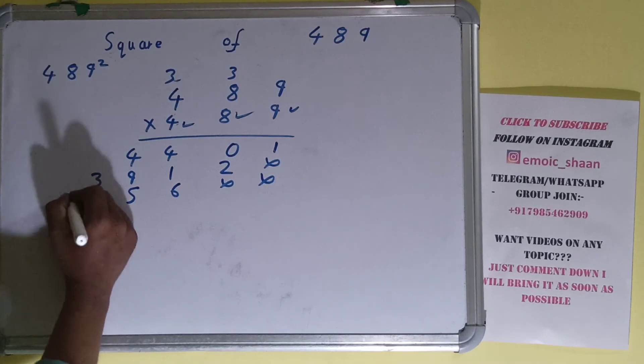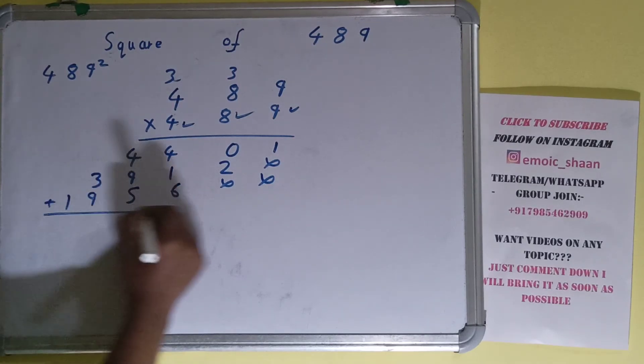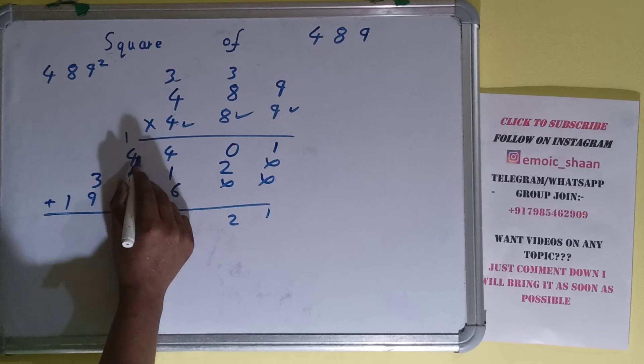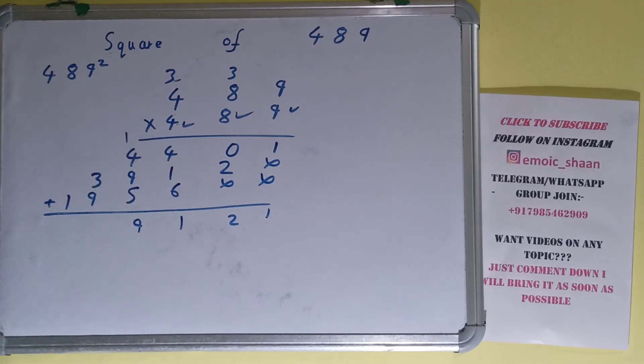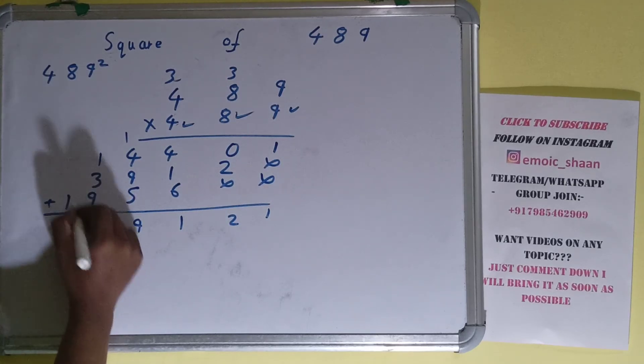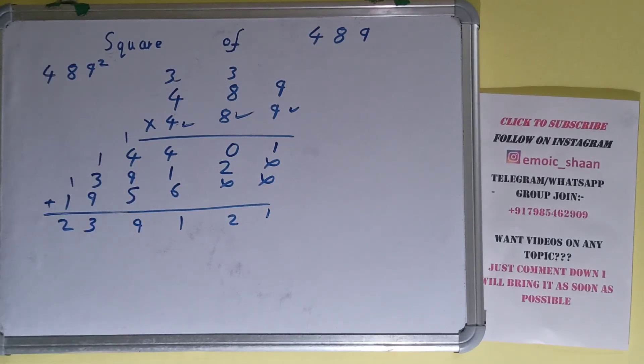Add everything. 1, 2, 6 plus 1 is 7, plus 4 is 11, 1 carry. 5 plus 9 is 14 plus 5 is 19, 1 carry, 3, 1 carry, 2. So the answer will be 239121.